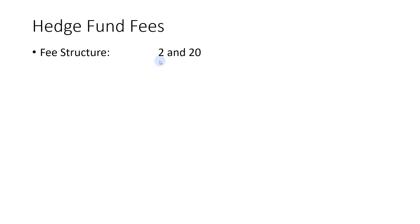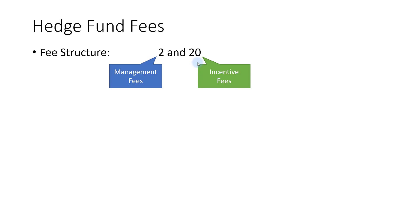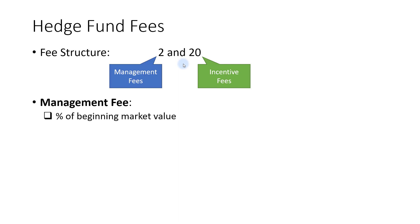So 2 here refers to the management fee and 20 refers to the incentive fees in percentage. For the management fees, it can be calculated as a percentage of the beginning market value or the beginning AUM of the fund, or it can be calculated as a percentage of ending market value.